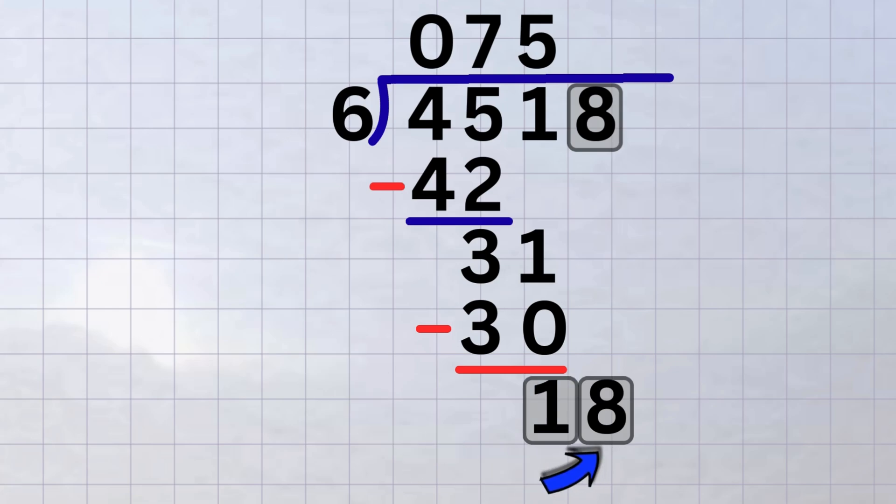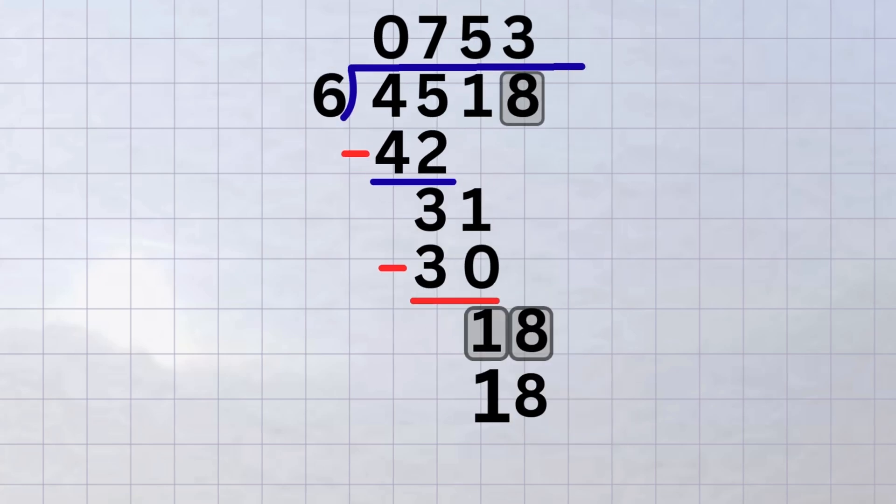Six goes into eighteen exactly three times. Write the three in the quotient above the eight in the dividend. Multiply. Six times three equals eighteen. Subtract. Eighteen minus eighteen leaves zero. So, how do I know when I'm done with the problem? You're done when you've brought down every digit of the dividend, and the remainder is smaller than the divisor. At that point, you've fully divided.